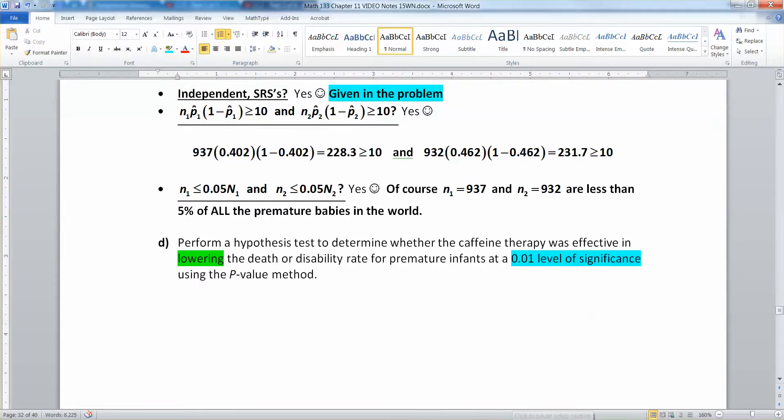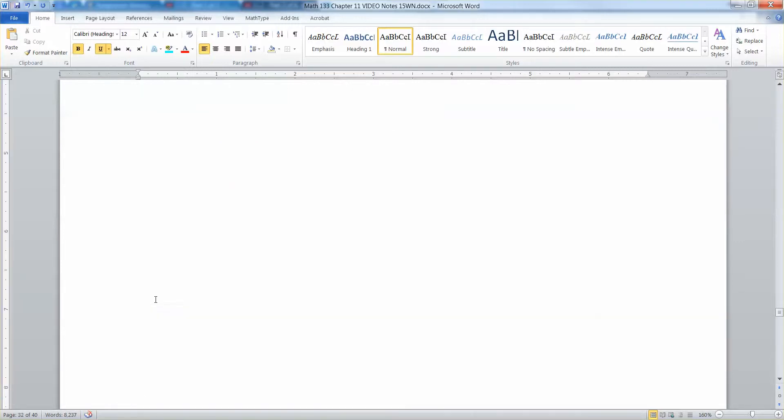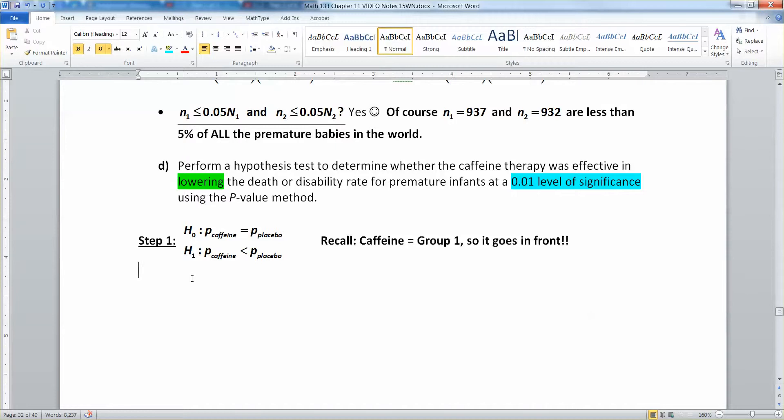For the null hypothesis, we're going to assume that the caffeine group and the placebo group are equal to each other, and then the alternative to that is going to be that the caffeine group is lower. Since the caffeine group is group one, that's going to go in front. Step two is our alpha, and since it tells us our level of significance is 0.01, that means that alpha is 0.01 because that's what alpha is, the level of significance.